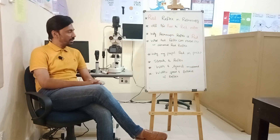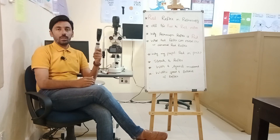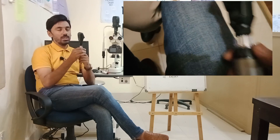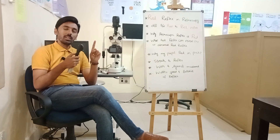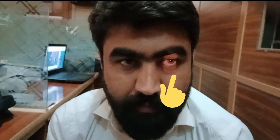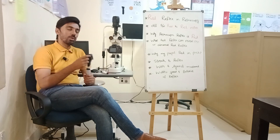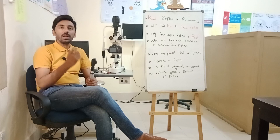The retinoscope is a handheld instrument and the procedure is called retinoscopy. When you switch the retinoscope on, light comes out of it. The light which we throw at the patient's eye — more precisely the light thrown on the patient's pupil — that light is called the retinoscopic streak.